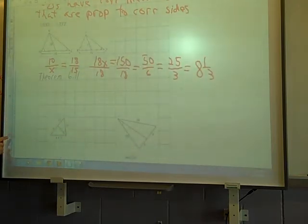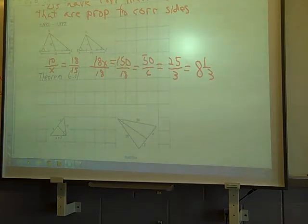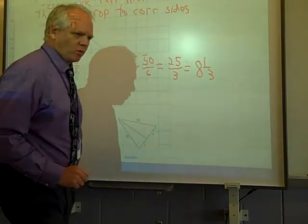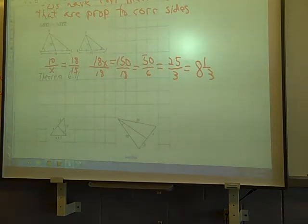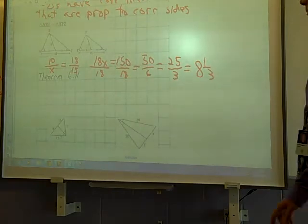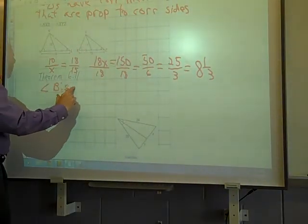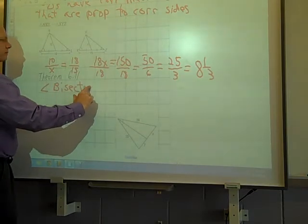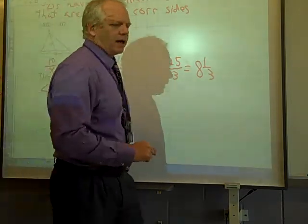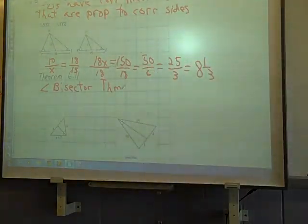All right, well we got one more, and this one is theorem 6.11. It's the angle bisector theorem. What it essentially says is it separates the opposite side. An angle bisector in a triangle separates the opposite side into segments that have the same ratio of the other two sides.